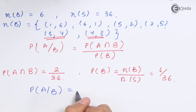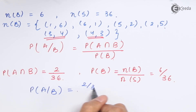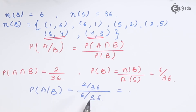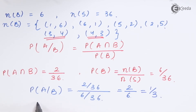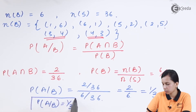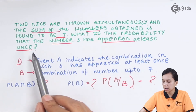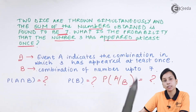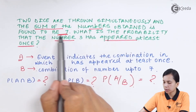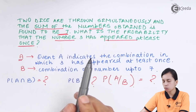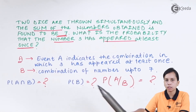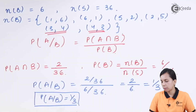P(A|B) equals (2/36) divided by (6/36). The 36s cancel out, giving 2/6, which simplifies to 1/3. So the probability that the number three has appeared at least once, given that the sum of the numbers obtained is seven, equals P(A|B) = 1/3.